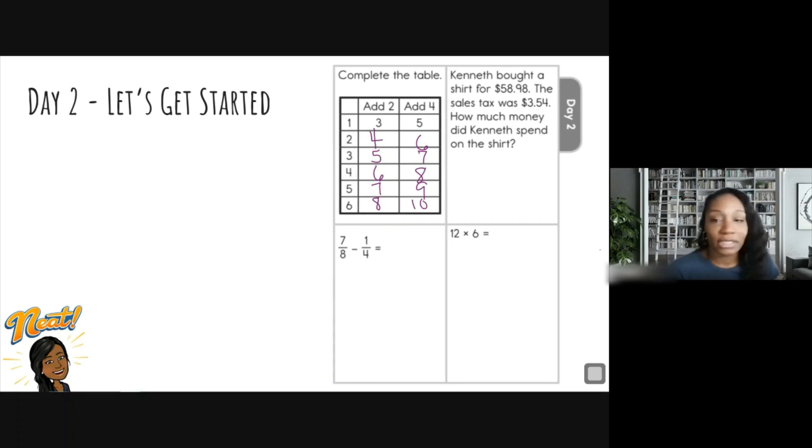All right. So it says, Kenneth bought a shirt for $58.98. The sales tax was $3.54. How much money did Kenneth spend on the shirt? So I'm going to circle my numbers. If he bought something and the sales tax is always added to what you buy, so we have to do that first.